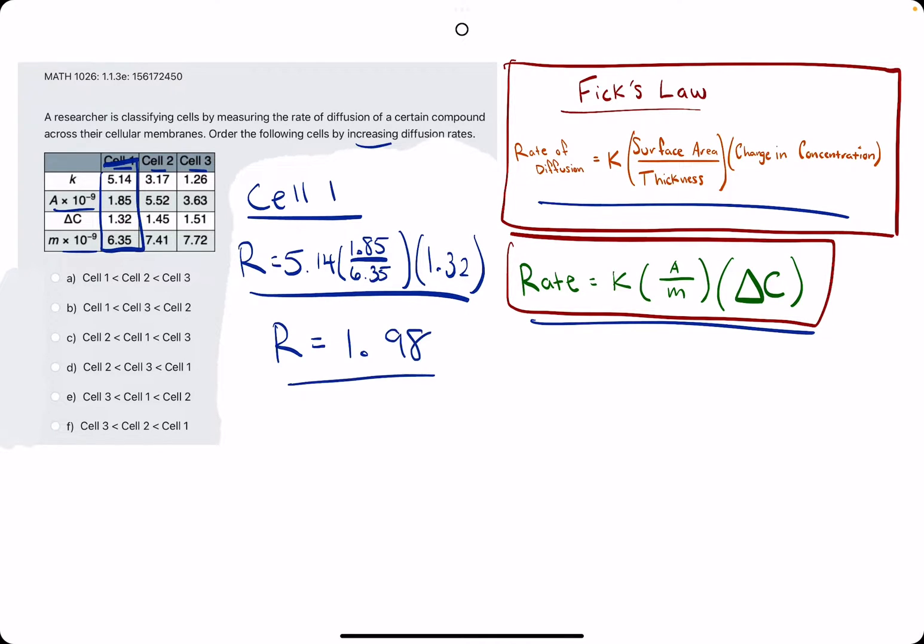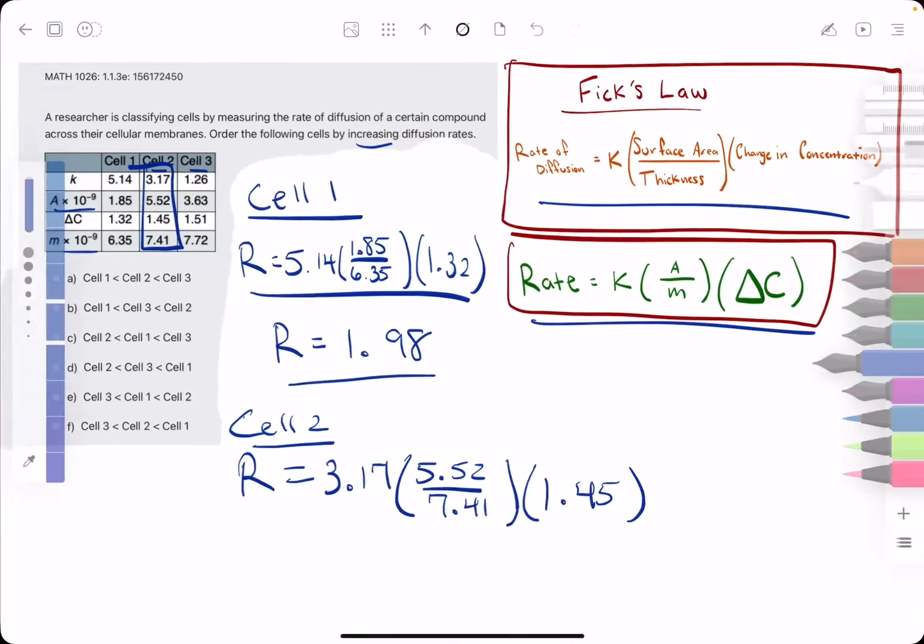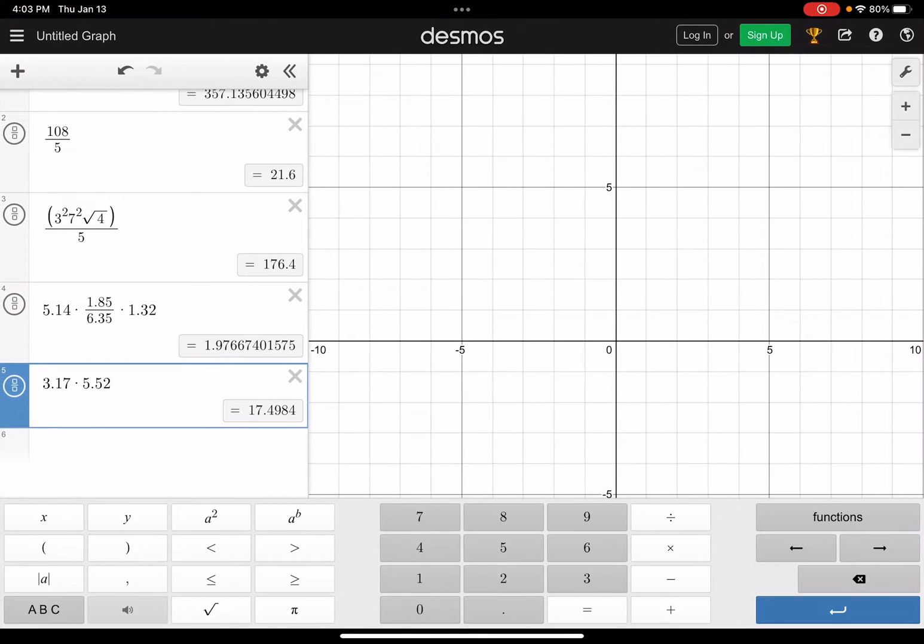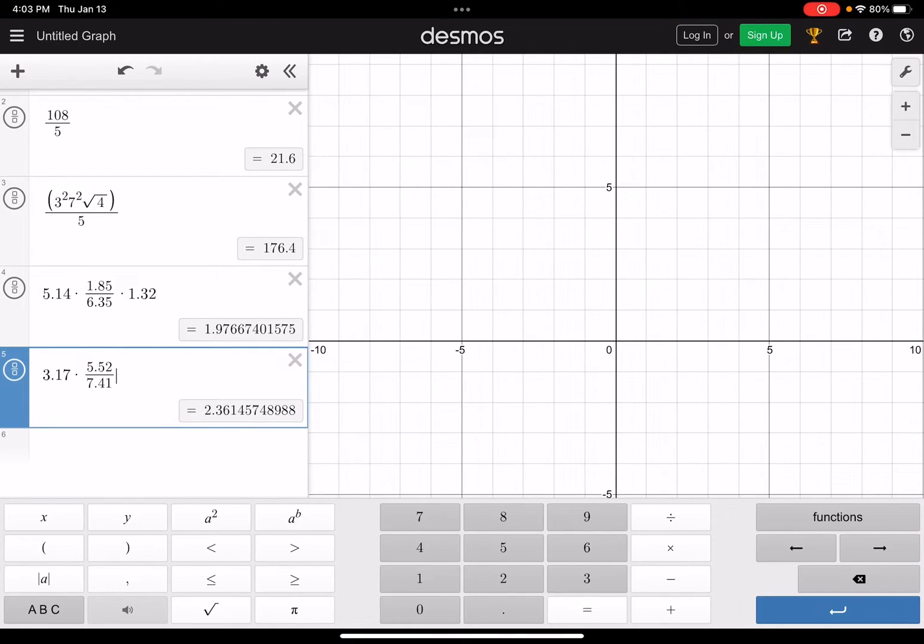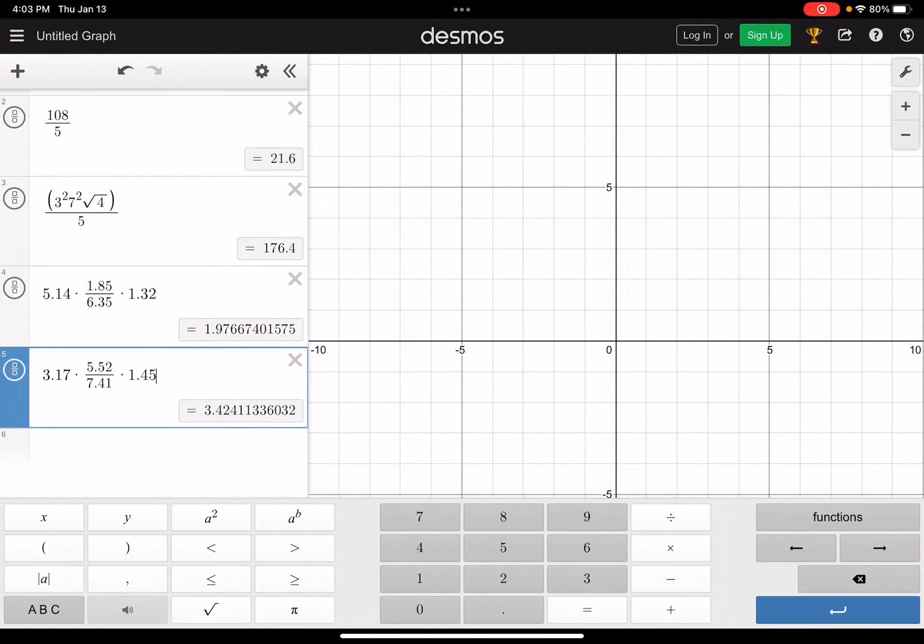Let's see if we can roll through these next two. Working with Cell 2 now, we have the rate will be equal to K which is 3.17, area over the thickness which is 5.52 divided by 7.41, all times delta C which is 1.45. Let's calculate this: 3.17 times 5.52 divided by 7.41 all times 1.45, and that'll give us about 3.42.